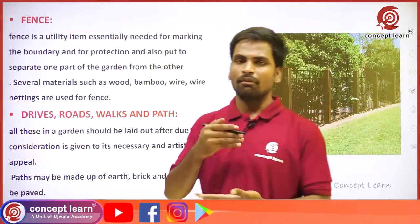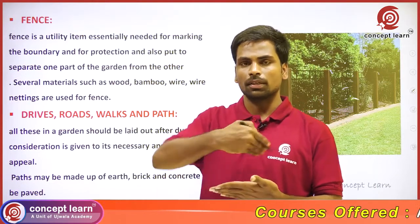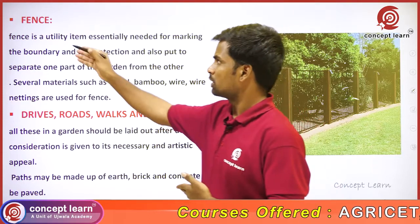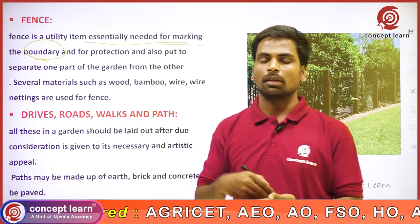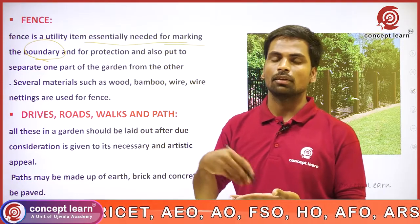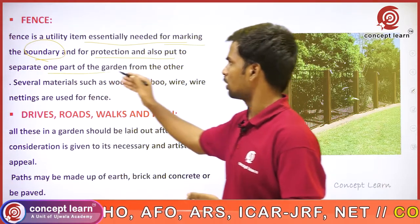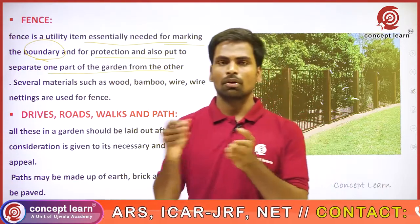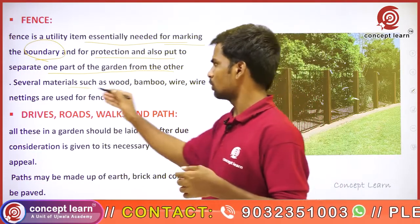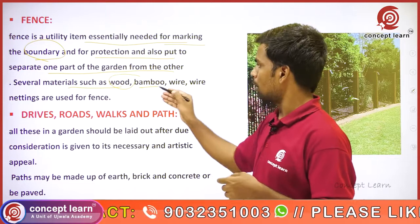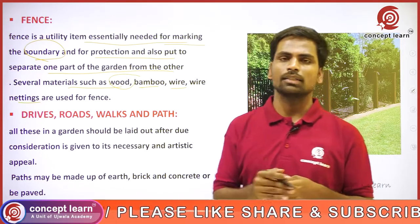Fence is a utility item — every garden requires an essential boundary. If an animal enters or damage occurs, the fence will protect the garden. It may also serve to separate areas within the garden. Several materials such as wood, bamboo, wire, and nettings are used as fencing materials.